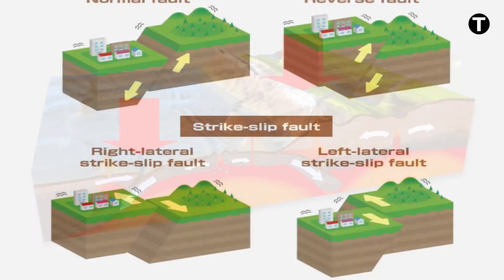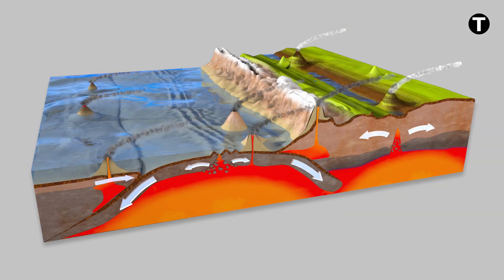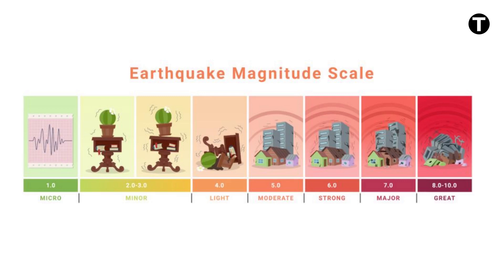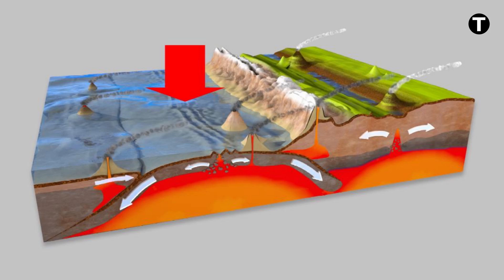The strike-slip fault is a steep structure where the two blocks move horizontally. Transform boundaries are examples of strike-slip faults. These faults, particularly at transform boundaries, can produce major earthquakes up to a magnitude of 8. At the level of large strike-slip faults, earthquakes occur with centers of intermediate depth, from 0 to 20 kilometers on average, which correspond to 15% of the energy.